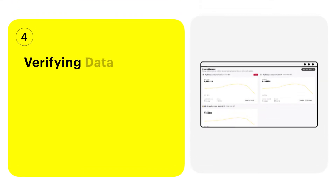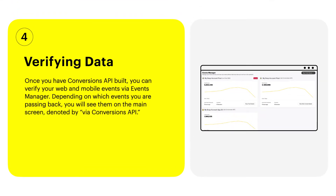Verifying data. Once you have the Conversions API built, you can verify web and mobile events via Events Manager in Ads Manager. Depending on which events you are passing back, you will see them on the main screen, denoted by 'Via Conversions API.' Web and app events will appear as separate entities.